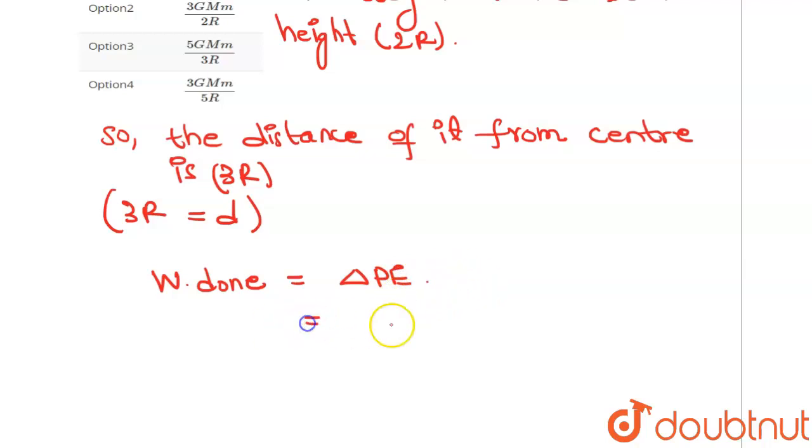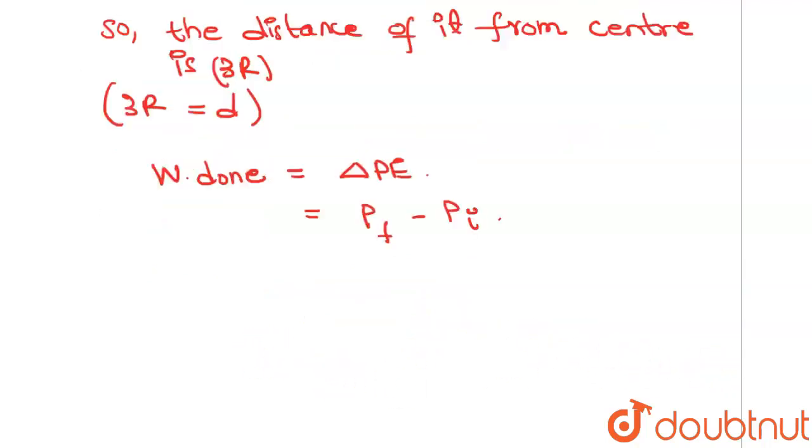Potential energy is negative of GM1M2 over R.